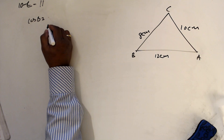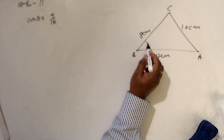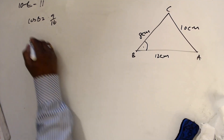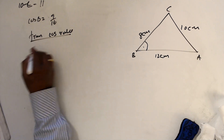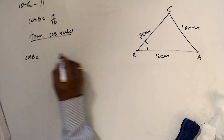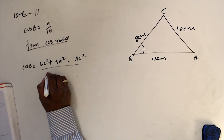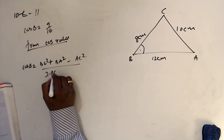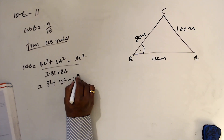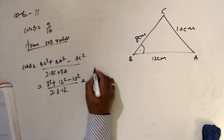Question number 11: we want to show that cos B = 9/16. Looking at the triangle, we know all three sides, so we use the cosine rule. cos B = (BC² + BA² - AC²) / (2 · BC · BA). Substituting: (8² + 12² - 10²) / (2 · 8 · 12).